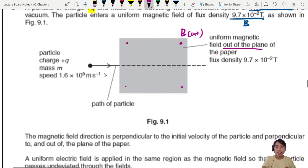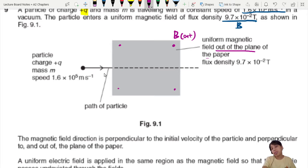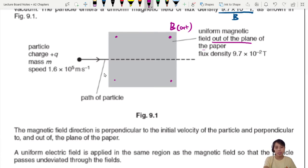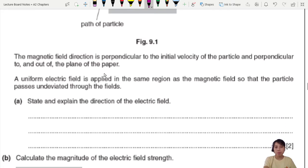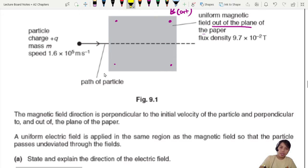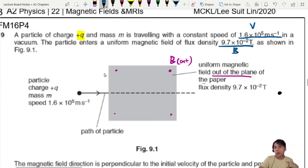Magnetic field is perpendicular to initial velocity, yes, perpendicular because it's out of the page. Uniform field, electric field is applied in the same region as the magnetic field so that the particle goes undeviated. State and explain the direction of the electric field. Keyword is undeviated. Undeviated means this particle will not deflect. Why?